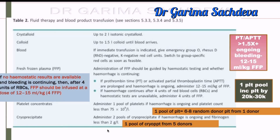Regarding platelet concentrates in PPH: start if platelet count is less than 75,000 — note this differs from APH where the cutoff was less than 50,000. For cryoprecipitate in PPH: give if fibrinogen is less than 2 gram per liter — again higher than the APH cutoff of less than 1 gram per liter. Knowing these differences between APH and PPH guidelines is important and has been frequently exam-tested.